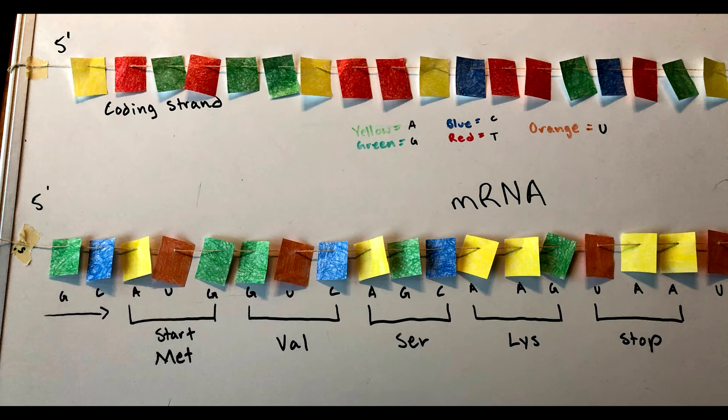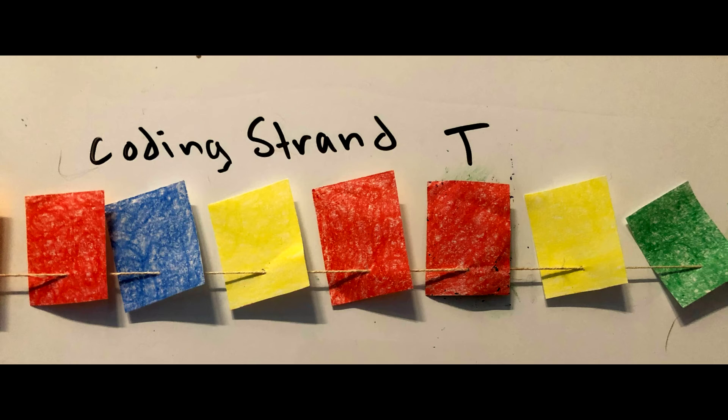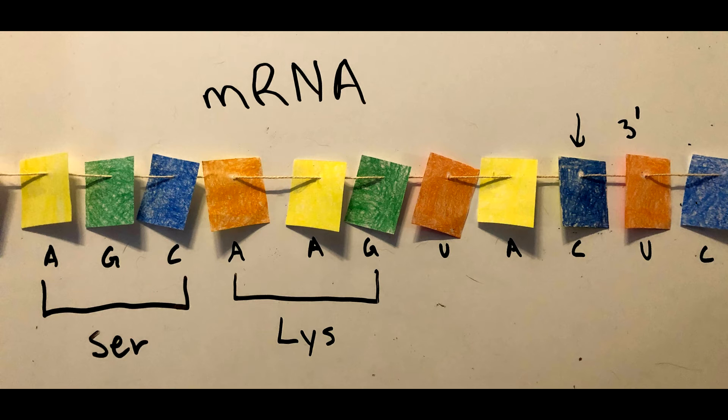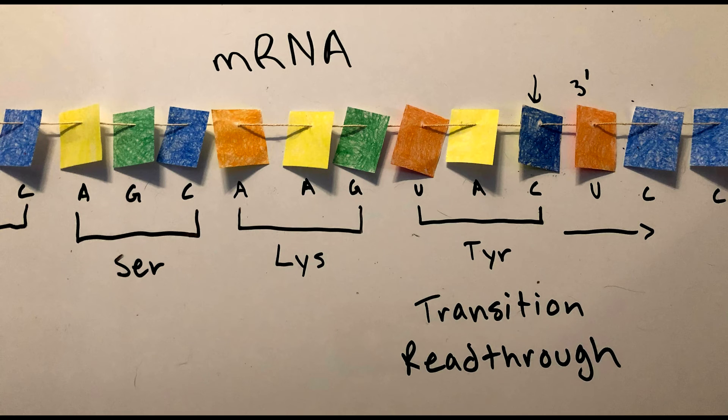Back to the original. If this T in the coding strand is changed to a G, then this nucleic acid will be a C and this codon will no longer stop translation and will instead be translated to tyrosine. Also, translation will continue down the mRNA.